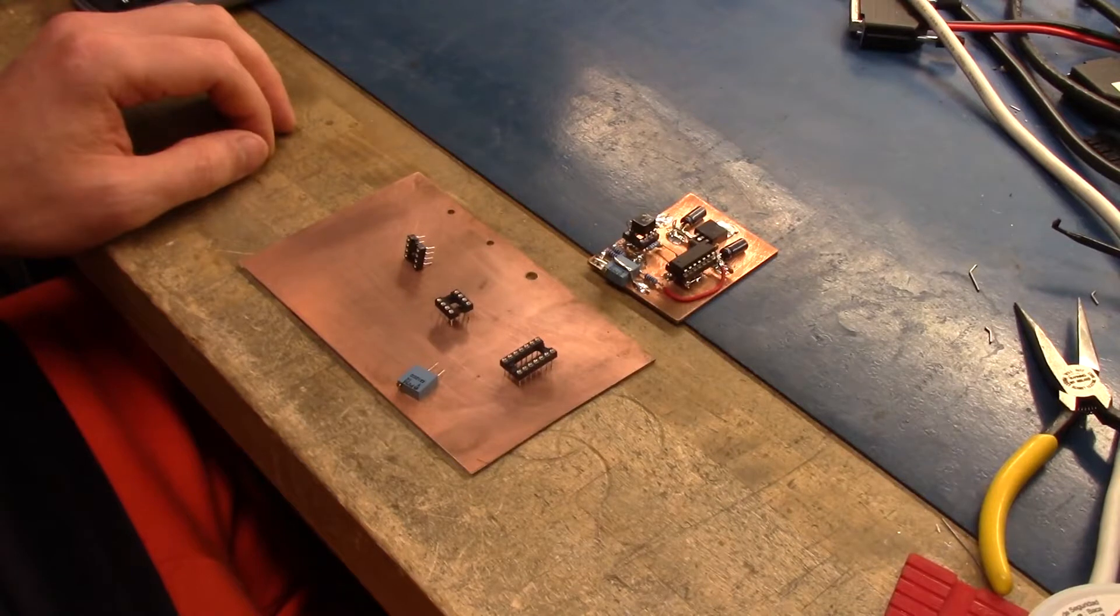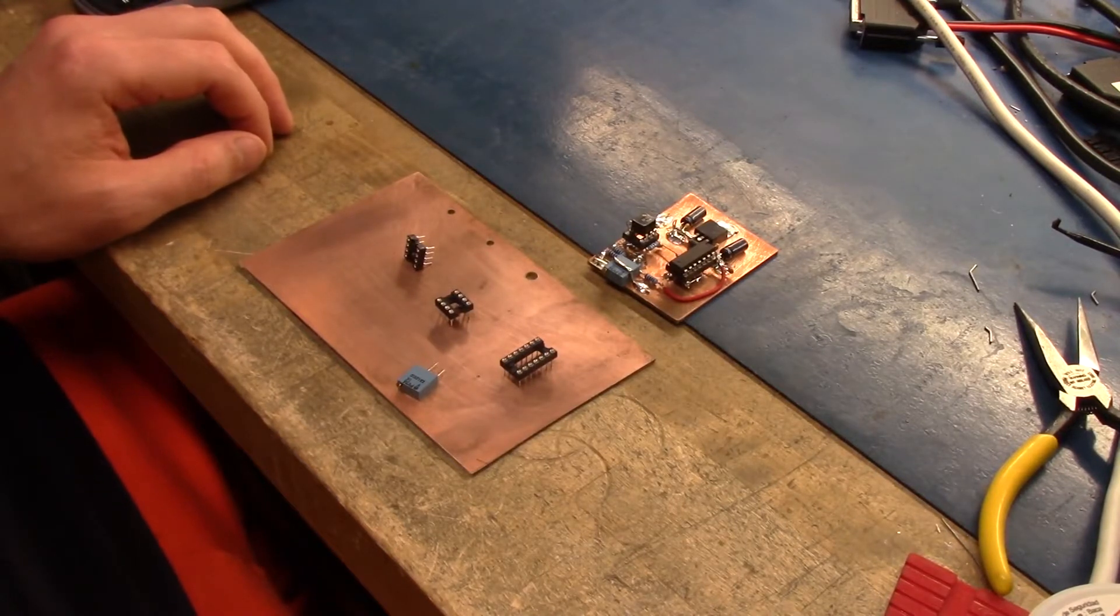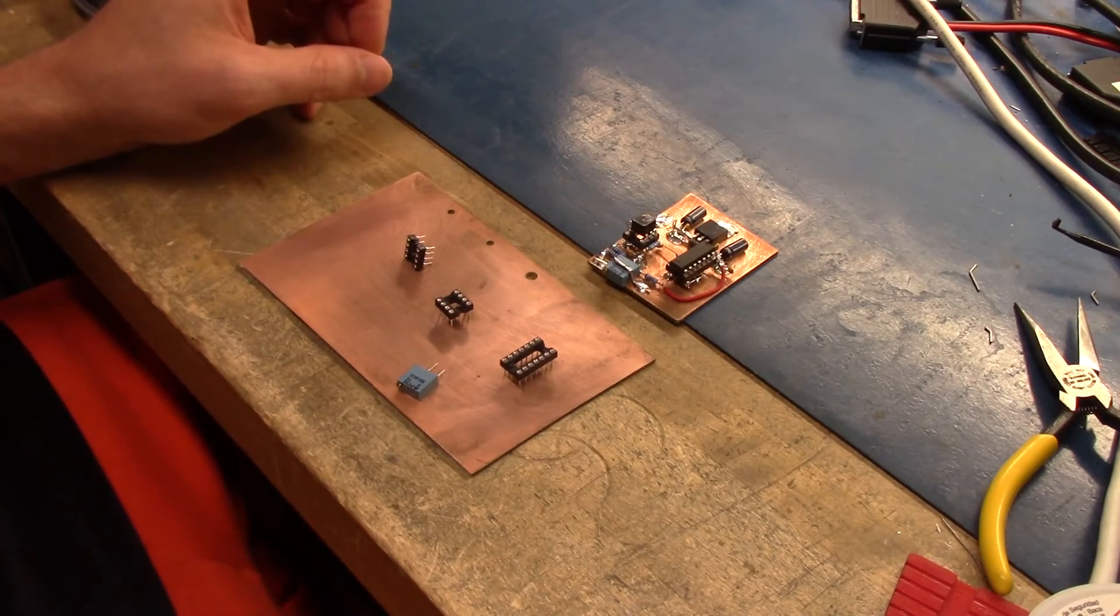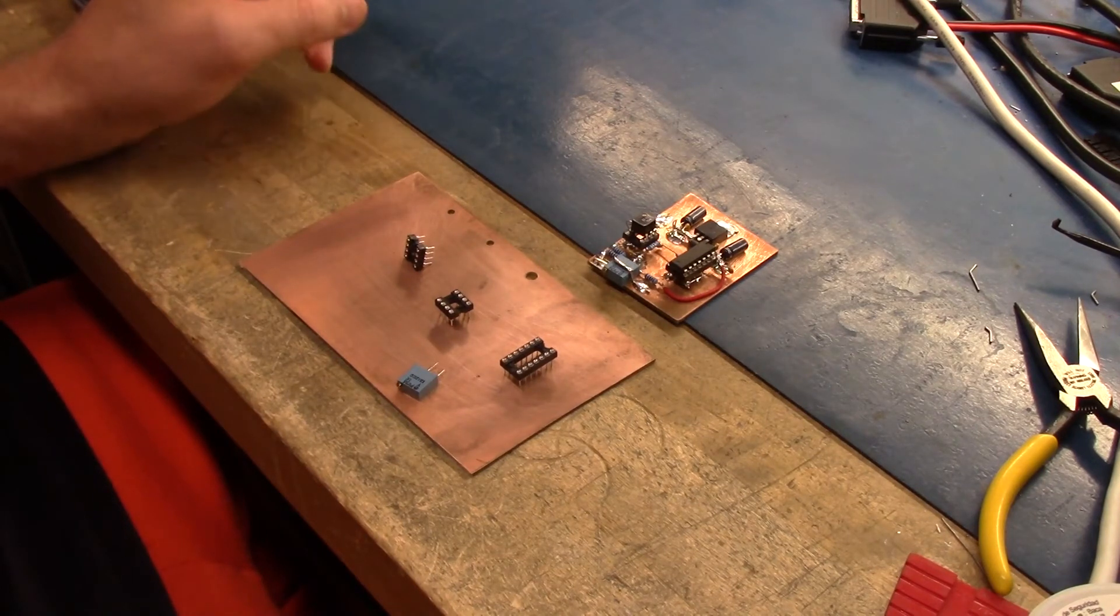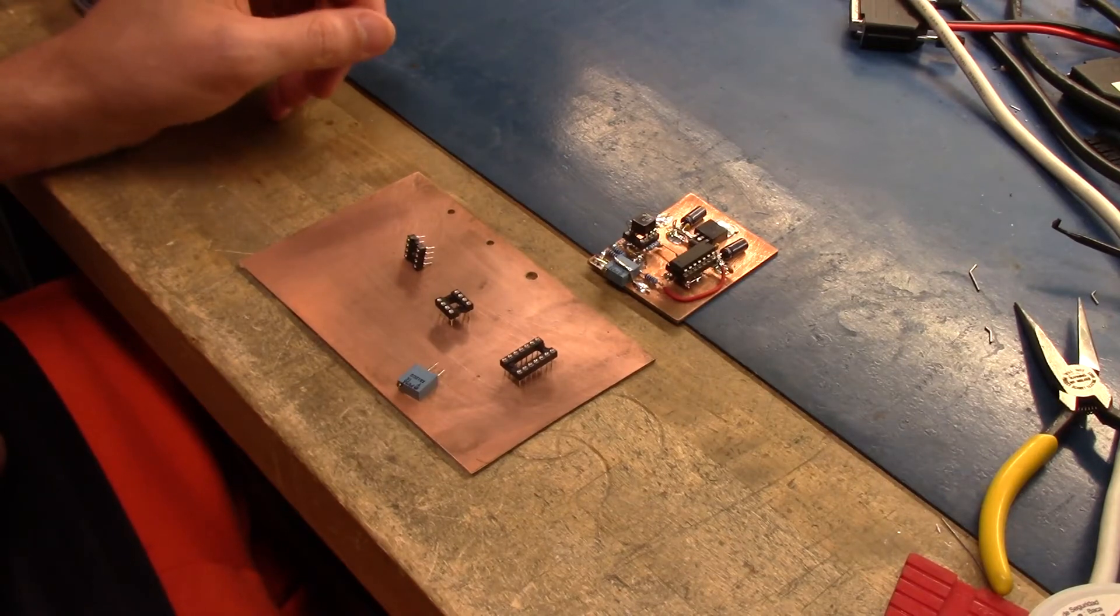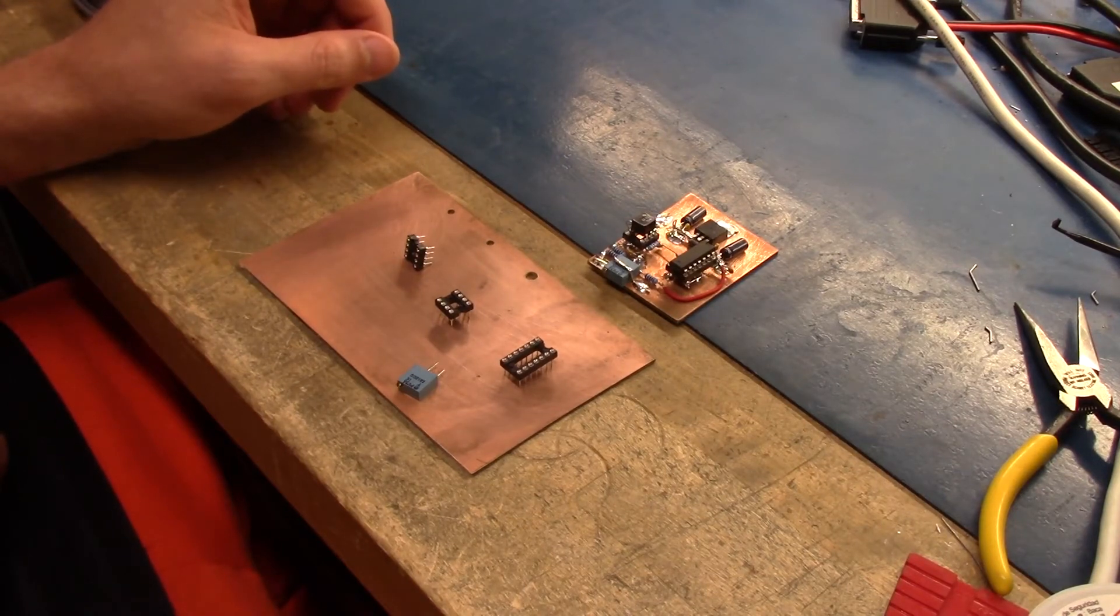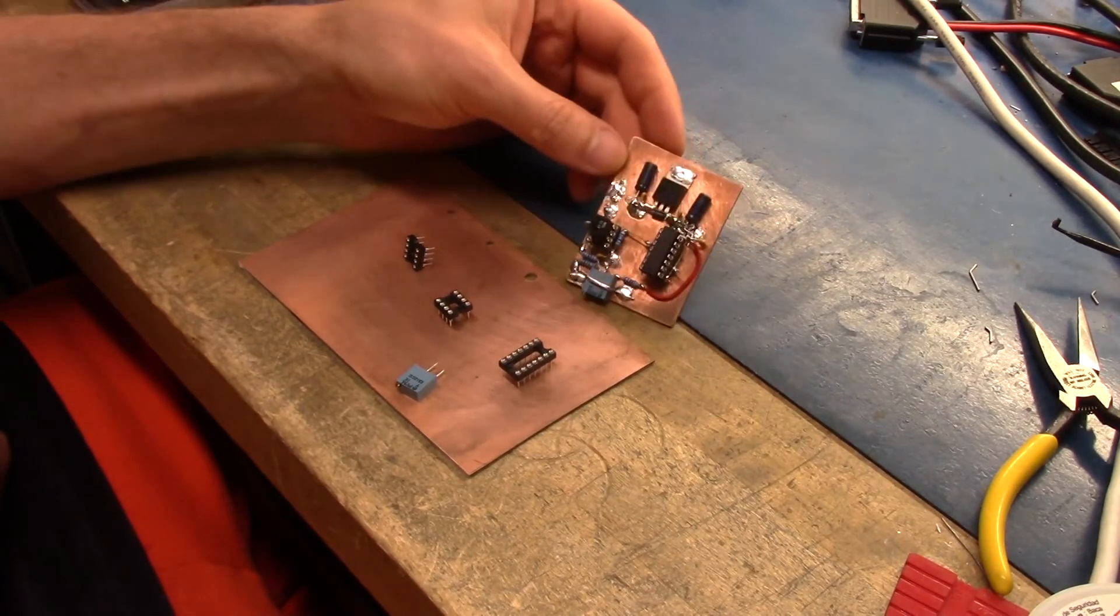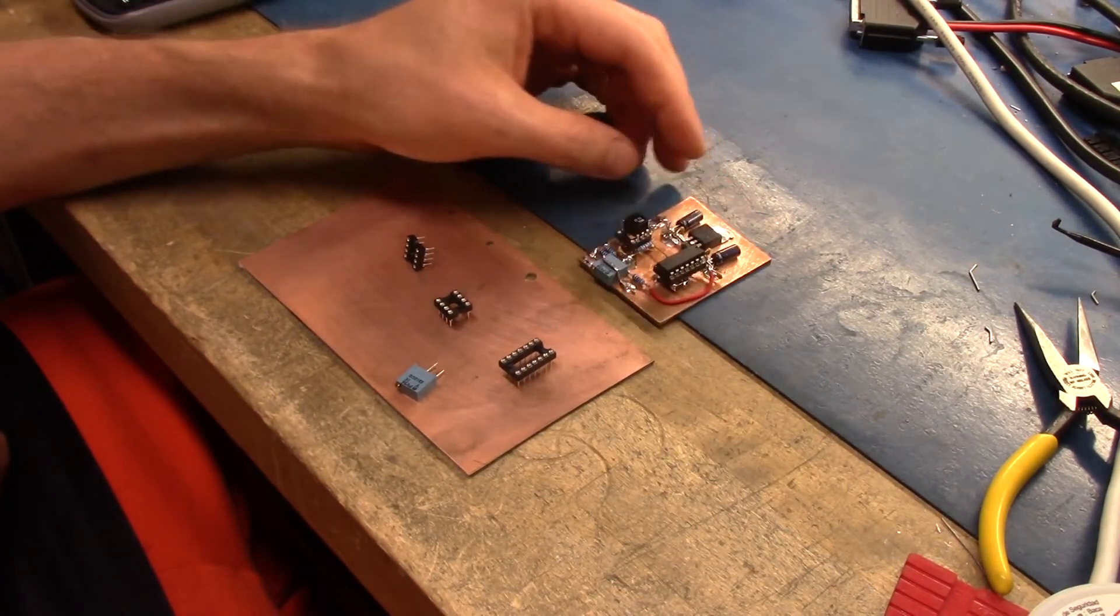The first thing you want to pay attention to in any layout is where the physical parts are going to go and how much space you're going to need. I tend to just eyeball it and try and figure it out on the fly. Sometimes it doesn't work, sometimes you back yourself into a corner.